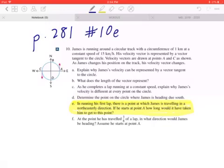Hi everyone, we're looking at question 10e on page 281. The question says James is running around a circular track with a circumference of 1 km at a constant speed of 15 km per hour.